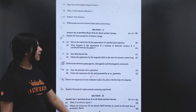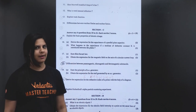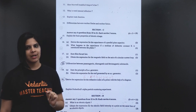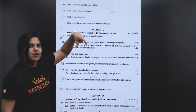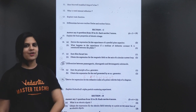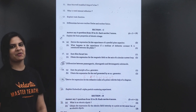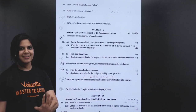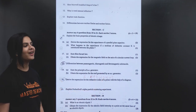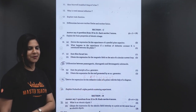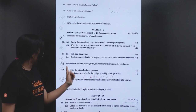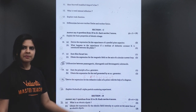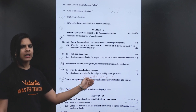Obtain the expression for magnetic field on the axis of a circular current loop — this is very important, I will do a video separately on it. Then, differentiate between paramagnetic, diamagnetic, and ferromagnetic materials.